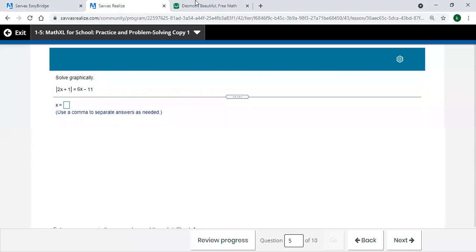Alright, Algebra 2 lesson 1.5, question number 5, and for me I need that other number as well, it's 1.5.25. Alright, solve graphically an absolute value equal to a linear, and I do think that might be the easiest way to do it.